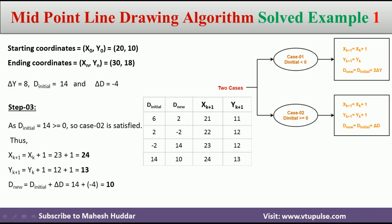Using d_initial as 14, which is greater than 0, we use case number 2 again and calculate the new point xk+1 and yk+1. d_new is equivalent to 10, and xk+1 and yk+1 are (24, 13) respectively. This 10 becomes d_initial for the next iteration. Again, 10 is greater than 0, so we select case 2 and use those three equations. The new point becomes (25, 14) and d_new becomes 6.